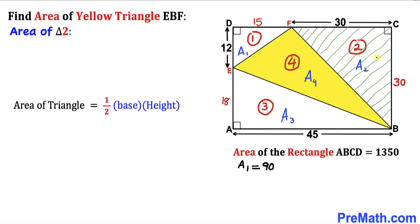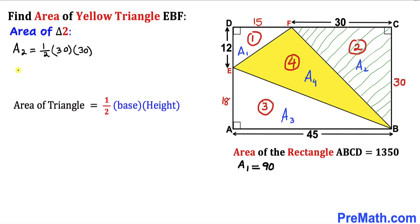Now let's focus on triangle 2 and find its area. A sub 2 equals one-half times base times height. The base is 30 and the height is 30 as well. Simplifying, A sub 2 turns out to be 450 square units.